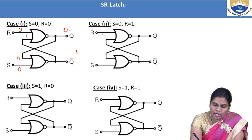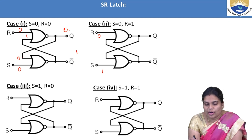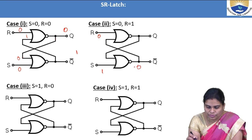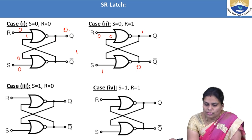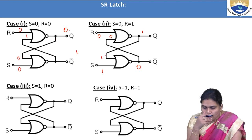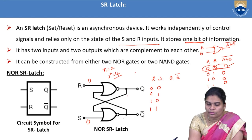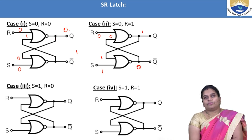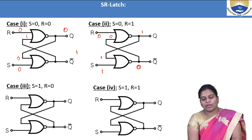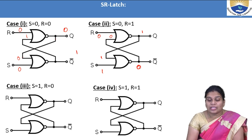Second condition: S=0, R=1. From the NOR gate truth table, any one input being 1 gives output 0. So with R=1, the first NOR gate output is 0 (Q=0). This 0 feeds into the second gate; with both inputs being 0,0, the output is 1 (Q-bar=1). Then this 1 feeds back — one input is 1, so the output remains 0. Thus when S=0, R=1, the output Q=0, Q-bar=1 — this is the reset condition.